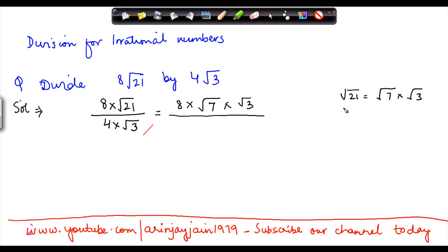Or rather, under root 21 can be written as under root 7 into 3, which is equal to under root 7 into under root 3. This is one of the properties of multiplication of irrational numbers.